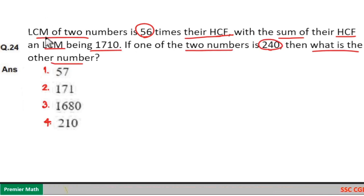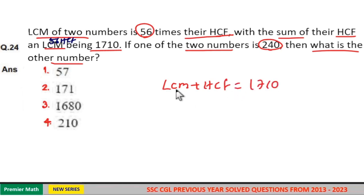Here LCM is 56 times HCF, so LCM equals 56 HCF. This means LCM plus HCF equals 1710. LCM is equal to 56 HCF, plus HCF is 57 HCF.